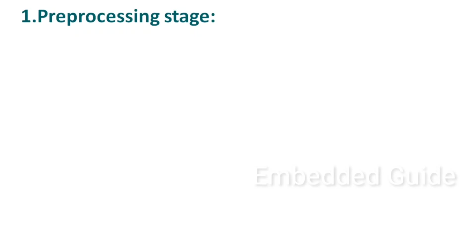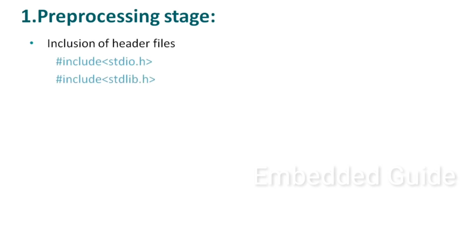The first stage is the pre-processing stage. This stage handles inclusion of header files — for example, #include stdio.h and #include stdlib.h. The original header file content is replaced, which includes predefined function declarations, structure definitions, and macro definitions.